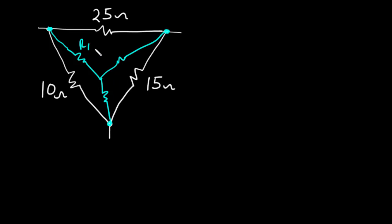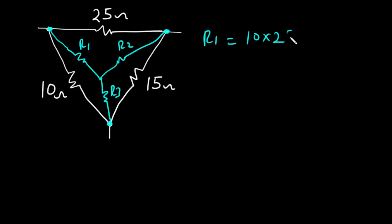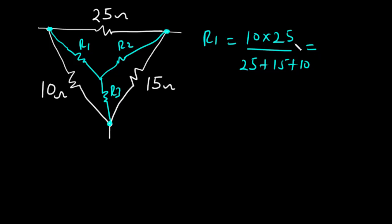We label the star network R1, R2, and R3. To find the value of R1, we multiply the opposite resistors, which are 10 and 25, and divide by the sum of the outer resistors: 25, 15, and 10. Now 10 times 25 is 250, and 25 plus 15 is 40, and 40 plus 10 is 50.